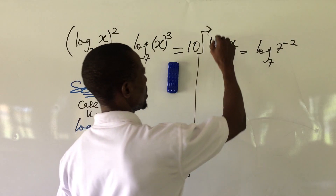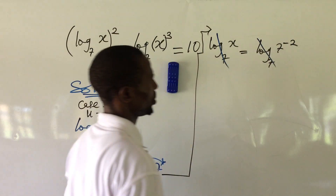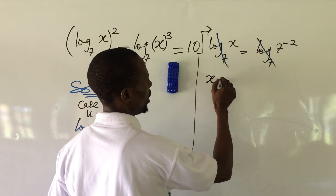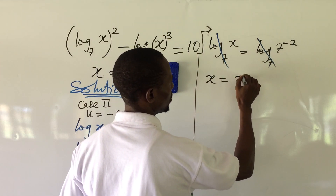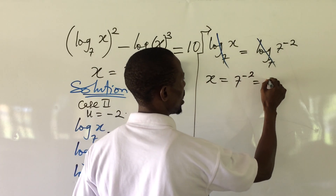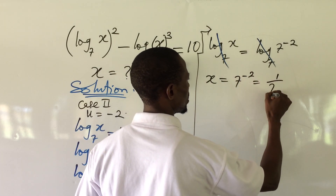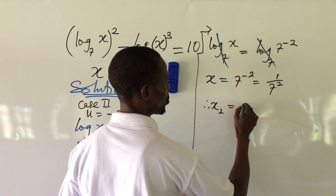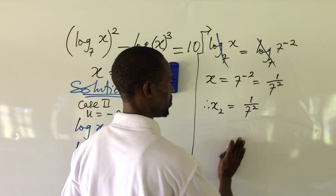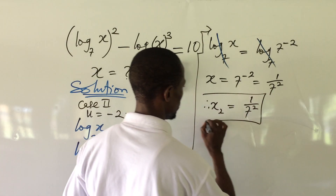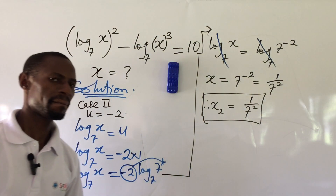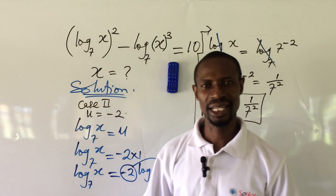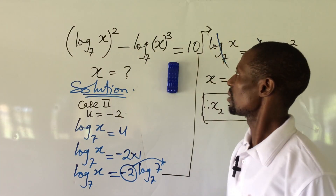The bases are the same so we equate the arguments, giving x equal to 7 to the power of minus 2, which is the same as 1 over 7 squared. Therefore our x₂ is equal to 1 over 7 squared. We have now gotten both values for x₁ and x₂ from this logarithm equation.